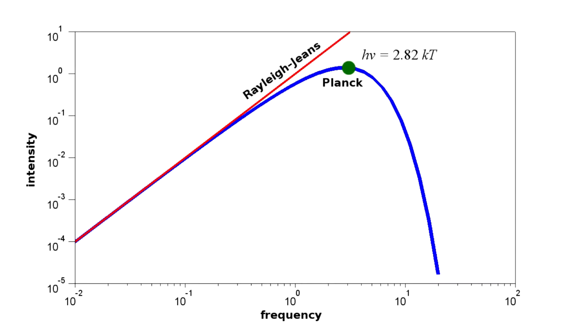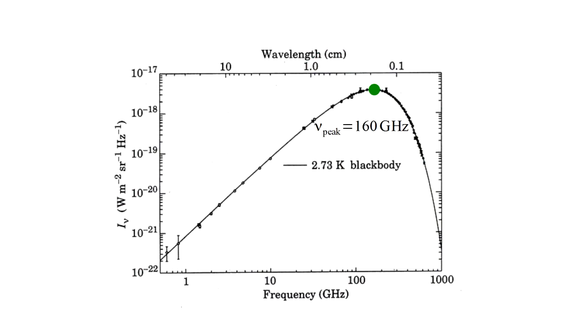Here's Planck's law in blue compared to the Rayleigh-Jeans law in red. They agree at low frequencies, but Planck's law reaches a peak at h nu equals 2.82 kt and then rapidly decreases. This accurately describes the cosmic microwave background radiation and indeed the radiation of any so-called black body at a given temperature T.